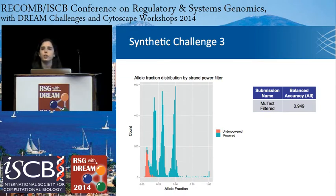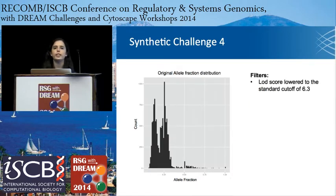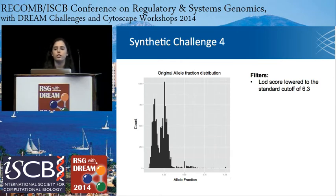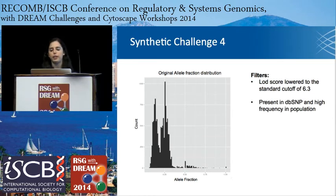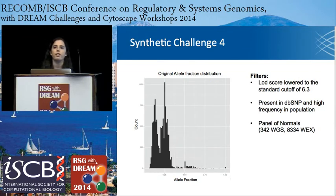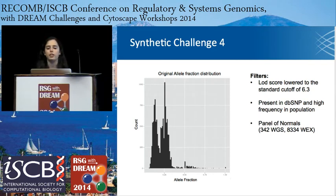Looking at synthetic challenge 4, the most recent synthetic challenge, the allele fraction distribution keeps getting lower, making them much more challenging to call. This challenge is also very similar to what we see from TCGA and other projects. Because of this and the low allele fractions, we lowered our LOD score back down to 6.3, the standard caller default. We also removed events present in dbSNP at high frequencies in the population. Members of our group were working on a larger panel of normals — not only around 350 whole genome samples, but also around 8,000 whole exomes. If we saw the mutation in some fraction of those 8,000 exomes, we removed it from our dataset.